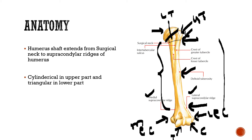The shaft of humerus extends from the surgical neck to the top border of the supracondylar ridge. In cross-section, the upper part of the shaft is cylindrical while the lower part is triangular. The cylindrical part has a bigger diameter and the triangular part has a smaller diameter, so when passing an intramedullary nail, this triangular part has to be widened, otherwise the nail gets stuck and can cause a fracture.